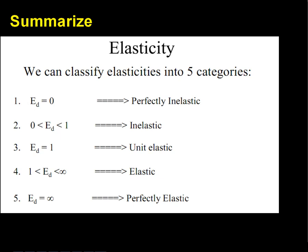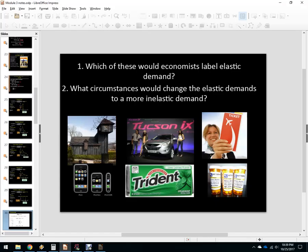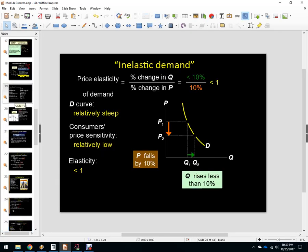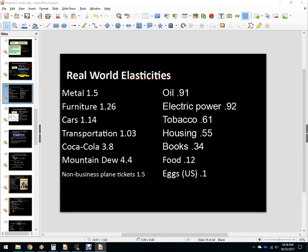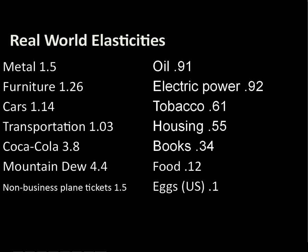Here are some real elasticities calculated by economists. Metal is slightly elastic; furniture is slightly elastic — that makes sense, people hold off on buying furniture. New cars come in at 1.14. Transportation is pretty close to unitary elasticity. Coca-Cola and Mountain Dew are very elastic — lots of substitutes, they're a luxury good, you can drink water instead. Non-business plane tickets — people going on vacation — are also elastic.